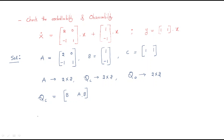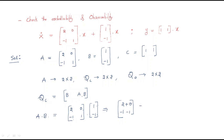A is [0, -1; 1, 1] and B is [1; -1]. Doing the multiplication: 0×1 + (-1)×(-1) = 1... working through the rows gives AB = [2; -2]. So the controllable matrix QC is formed as [B | AB].